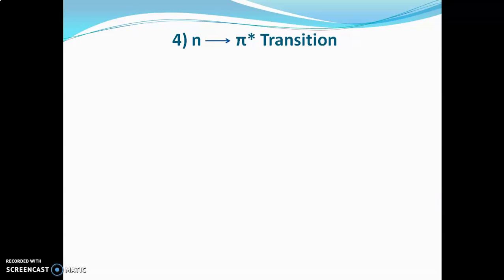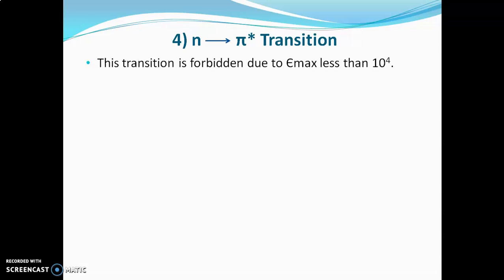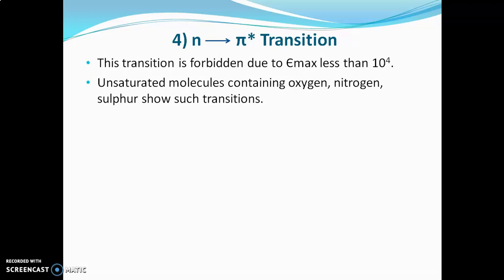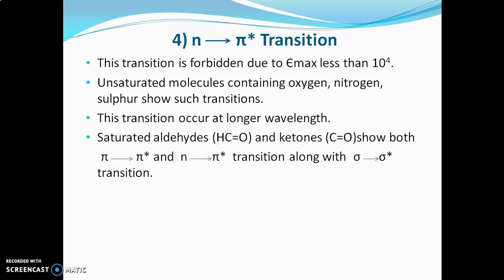The n to pi anti-bonding transition is a forbidden transition with Emax less than 10,000. Unsaturated molecules with heteroatoms like oxygen, nitrogen, sulfur, or halides show n to pi anti-bonding transition along with pi to pi anti-bonding transition. Saturated aldehydes and ketones will show sigma to sigma, pi to pi, and n to pi anti-bonding transitions — all three types.